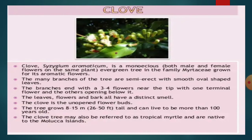The clove plant is a sadabahaar (evergreen) tree. This tree has a neat, conical crown. Its leaves are opposite (sammukh vinyaset), shiny green, and owing to the presence of oil glands, they are aromatic and fragrant.